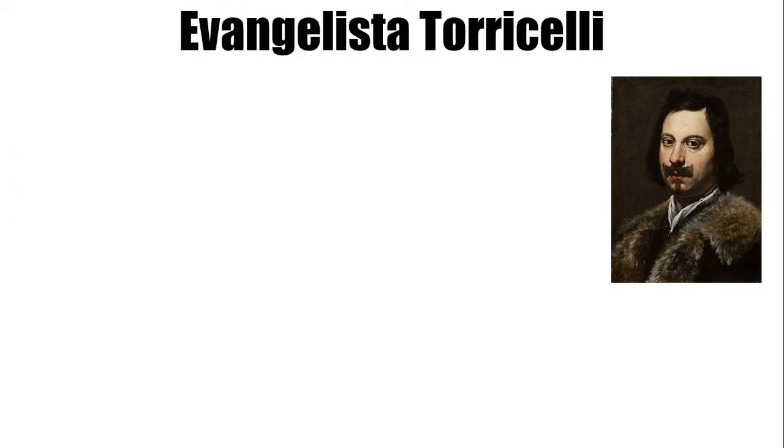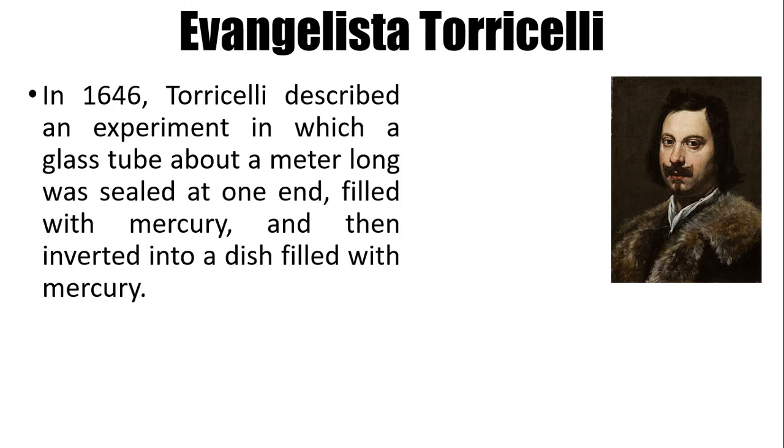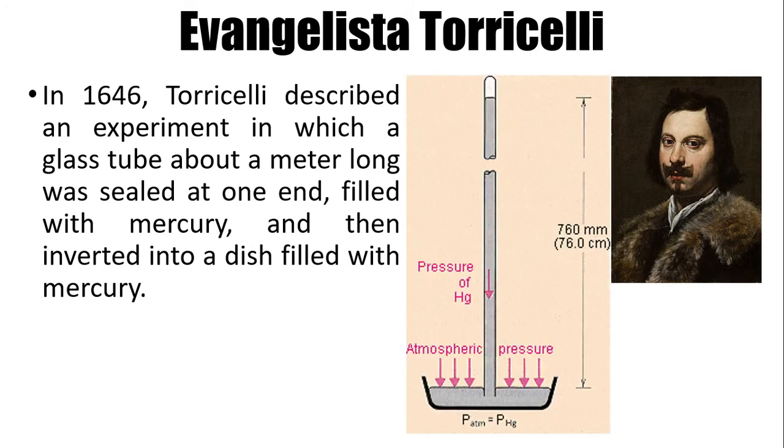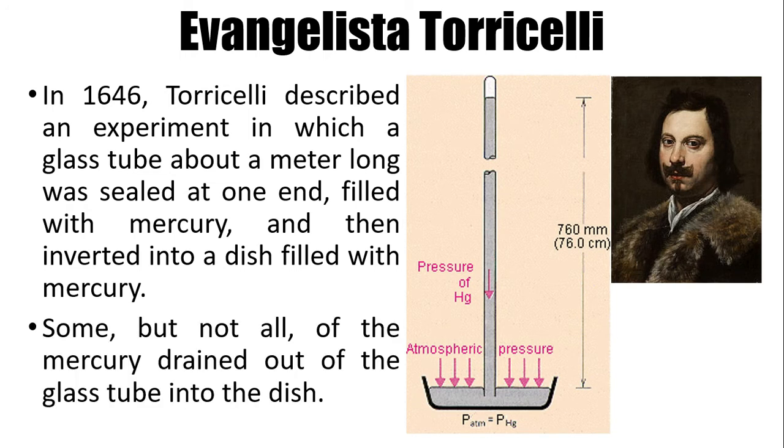In 1646, Torricelli described an experiment in which a glass tube about a meter long was sealed at one end, filled with mercury, and then inverted into a dish filled with mercury. He found out that some, but not all, of the mercury drained out of the glass tube into the dish. Torricelli explained this by assuming that mercury drains from the glass tube until the force of the column of mercury pushing down on the inside of the tube exactly balances the force of the atmosphere pushing down on the surface of the liquid outside the tube. The atmospheric pressure and the pressure of mercury are equal.